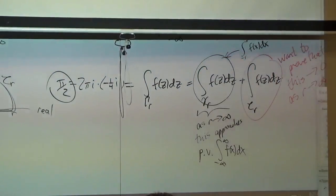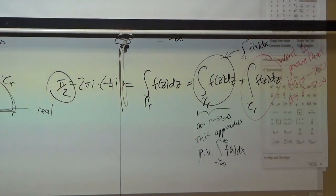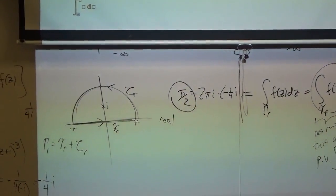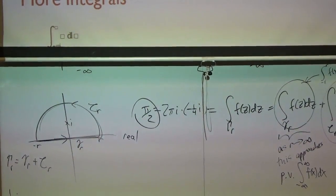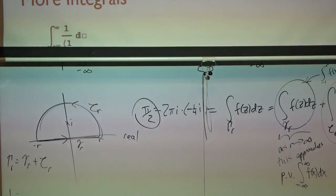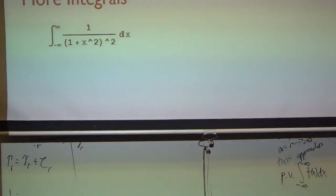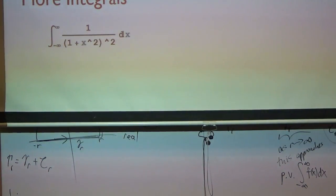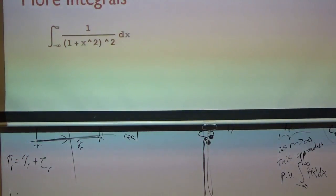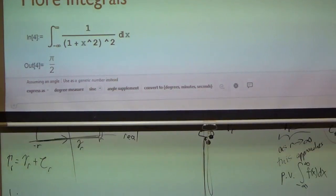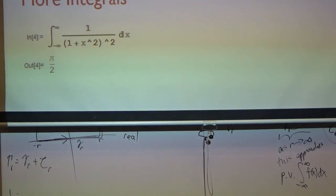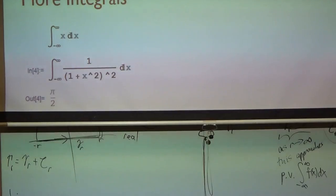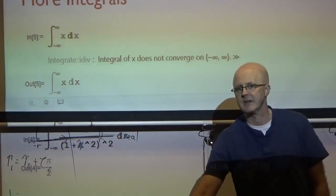Let's check that in Mathematica as an ordinary real integral. The answer should be π/2 — and it is. Now, does Mathematica compute principal values or regular values? We can test that by seeing what it does with the integral of x from minus infinity to infinity. It says it does not converge, so Mathematica is computing the ordinary improper integral, not the principal value. It doesn't matter for our example, though, because the integral of 1/(1+x²)² is genuinely convergent.